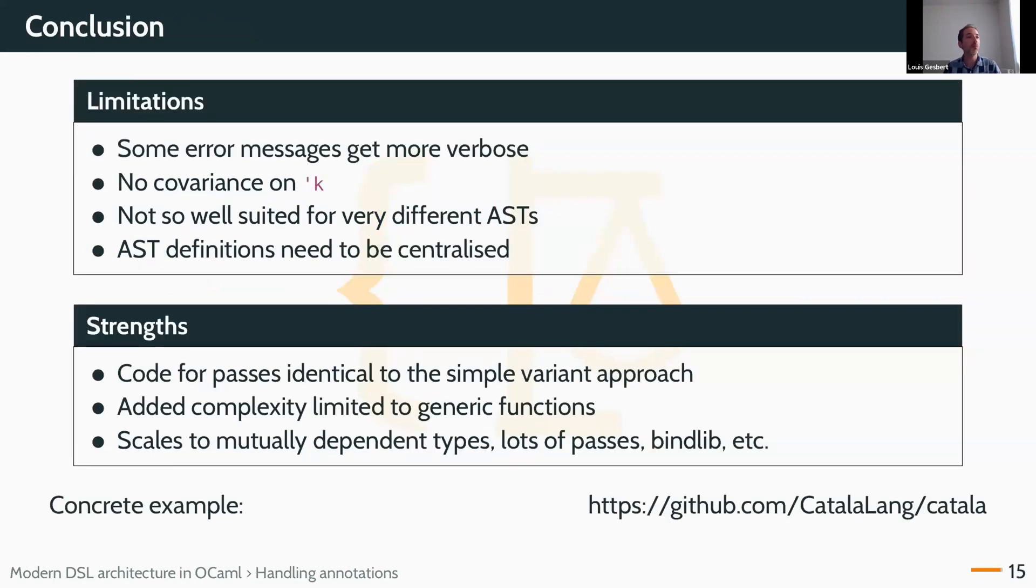To conclude, this still has a couple limitations. Some error messages get a little bit more verbose, but as I said, this is pretty contained, and I was pretty happy with it compared to other approaches. Basically, you get a little more verbosity when you do normal stuff, and a little bit more when you want to do polymorphic traversals and stuff like that, where the complexity resides. A small annoyance is that there's no covariance on the k parameter, which basically means it's a little difficult to write a function that would work on a subset of your different passes, but not all of them. It's not so bad.